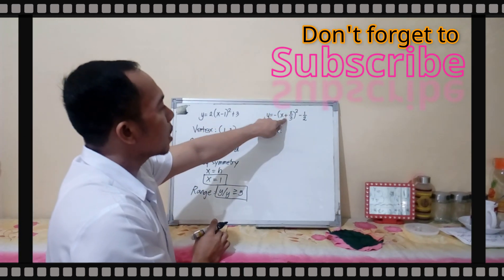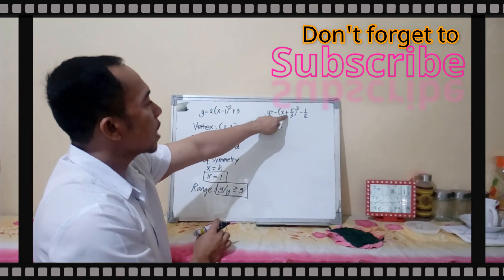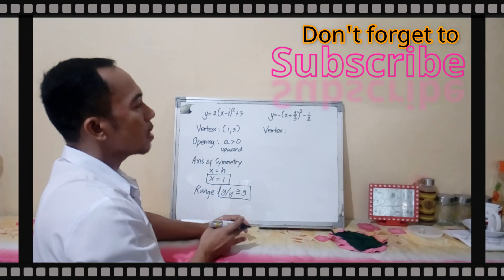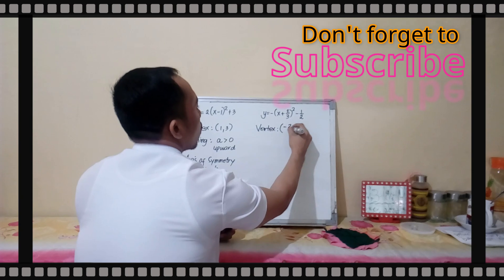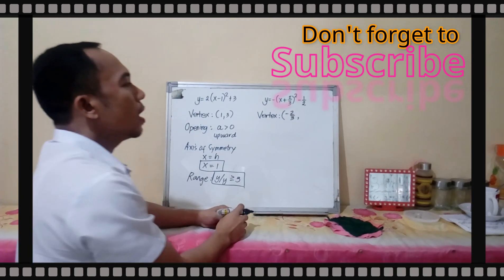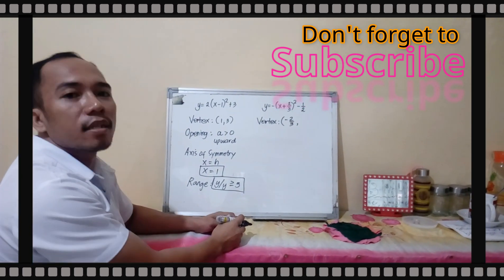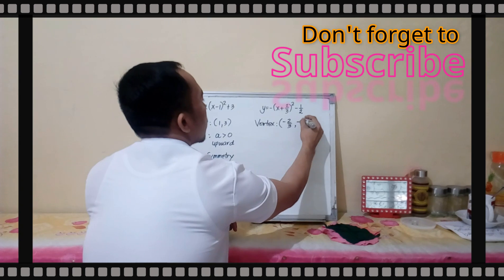The vertex is h, k. Our h here is negative because of the sign positive. Negative times negative is positive. Your vertex is negative 2 over 3, comma, your k is negative 1 half. It is negative 1 half. That will be your vertex.